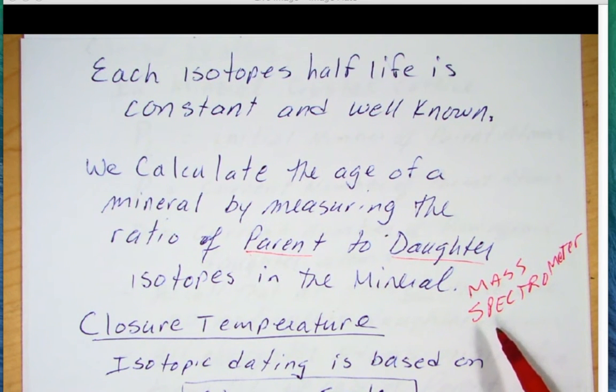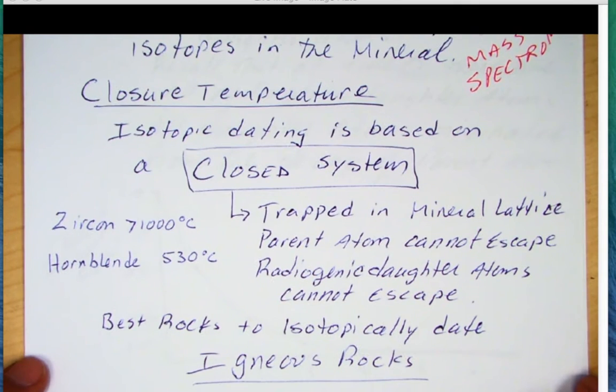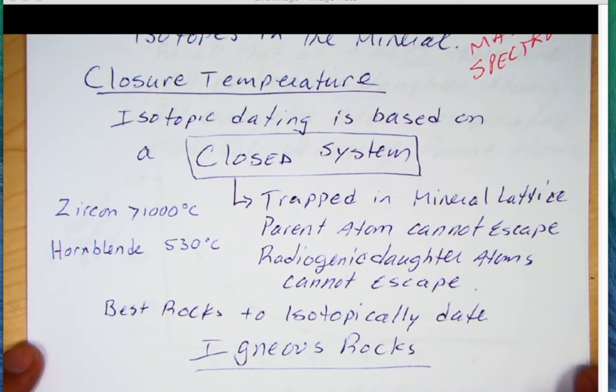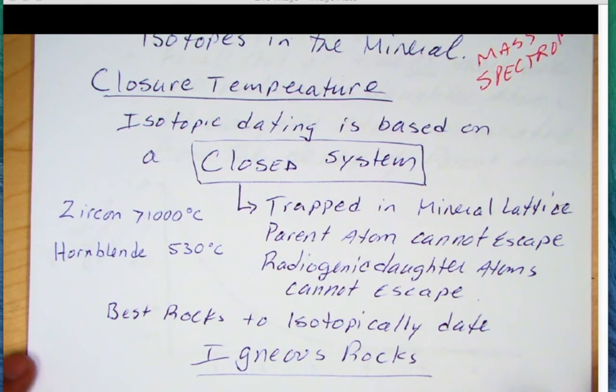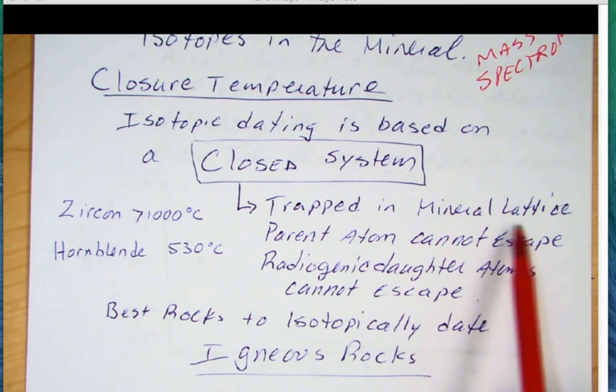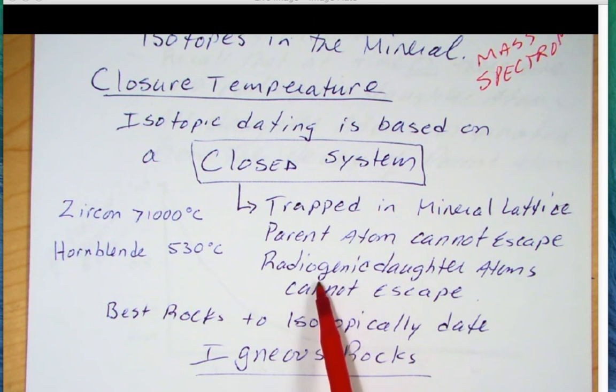Let's go to this concept of a closure temperature. Isotopic dating is based on a closed system. So the system has to close, essentially trap or cage in the radioactive atoms so that they cannot escape. And any daughter product that's grown is also trapped in that cage. And really that cage is a mineral lattice. So the parent atom cannot escape and the radiogenic daughter atoms cannot escape as well. So you have the number of parent atoms remaining plus the growth of those radiogenic daughters.